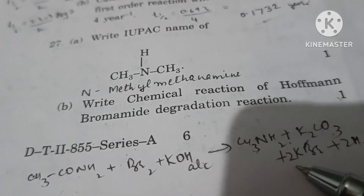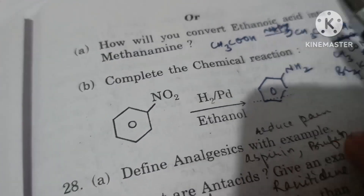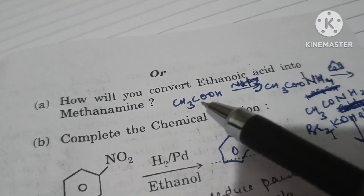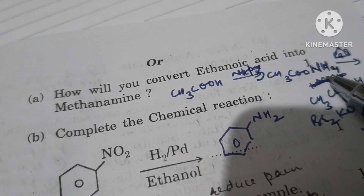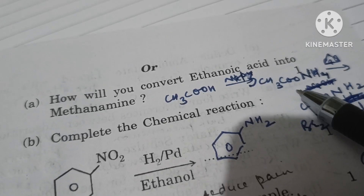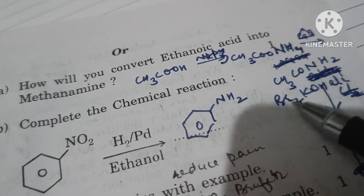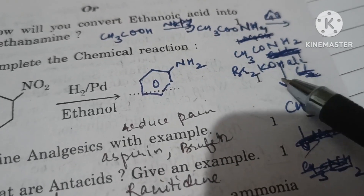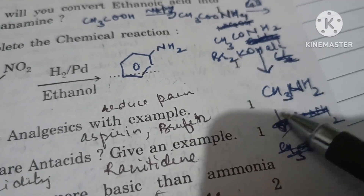How will you convert ethanoic acid into methanamine? React ethanoic acid with ammonia to form ammonium ethanoate; on heating it forms an amide. Then perform Hoffmann degradation by reacting with bromine and alcoholic KOH to get the one-carbon-less amine, methanamine.